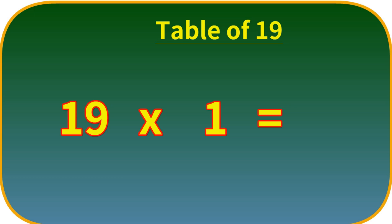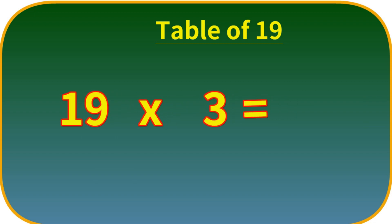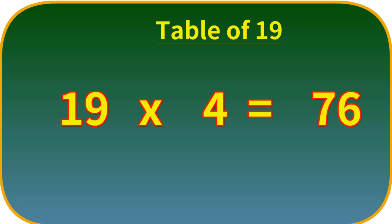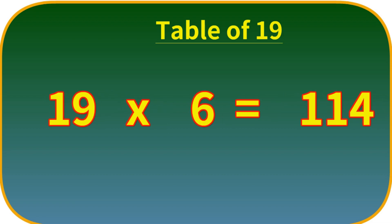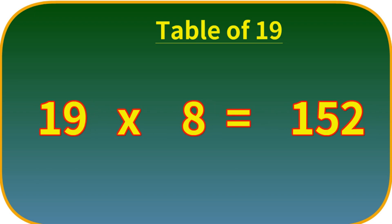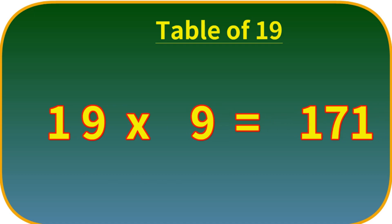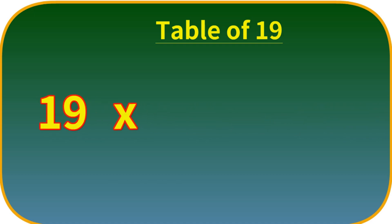Table of 19. 19 ones are 19. 19 twos are 38. 19 threes are 57. 19 fours are 76. 19 fives are 95. 19 sixes are 114. 19 sevens are 133. 19 eights are 152. 19 nines are 171. 19 tens are 190.